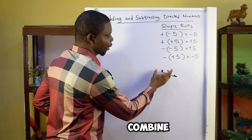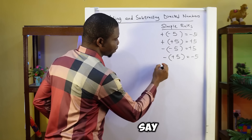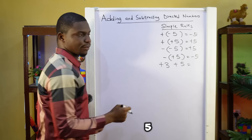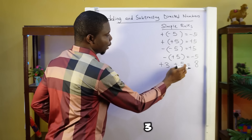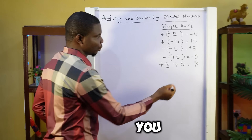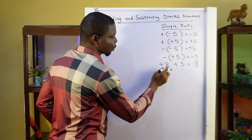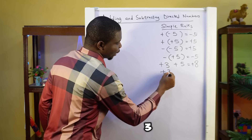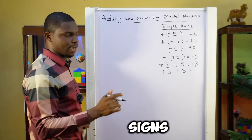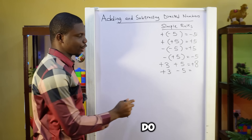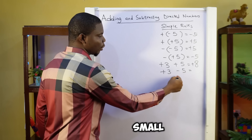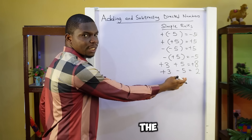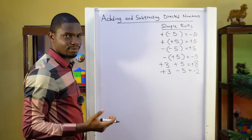Now let's move on to how to combine two directed numbers. If we have two positive numbers — plus 3 plus 5 — what you need to do is just add the numbers: 3 plus 5 gives you 8. And since the signs are both positive, you have plus 8. What about plus 3 minus 5? When you have different signs — plus and minus — what you need to do is subtract the smaller from the bigger, which gives 2. And then the sign you put is the sign of the bigger number, so this is minus 2.